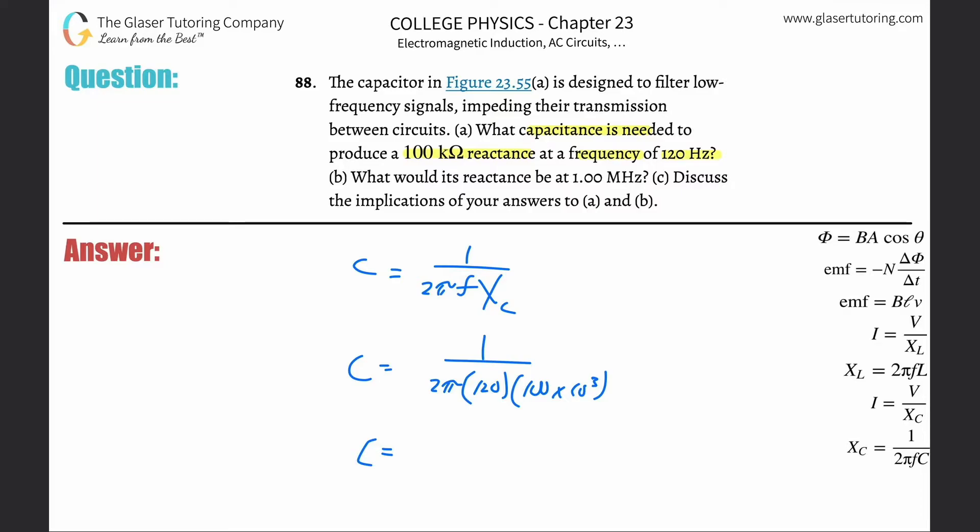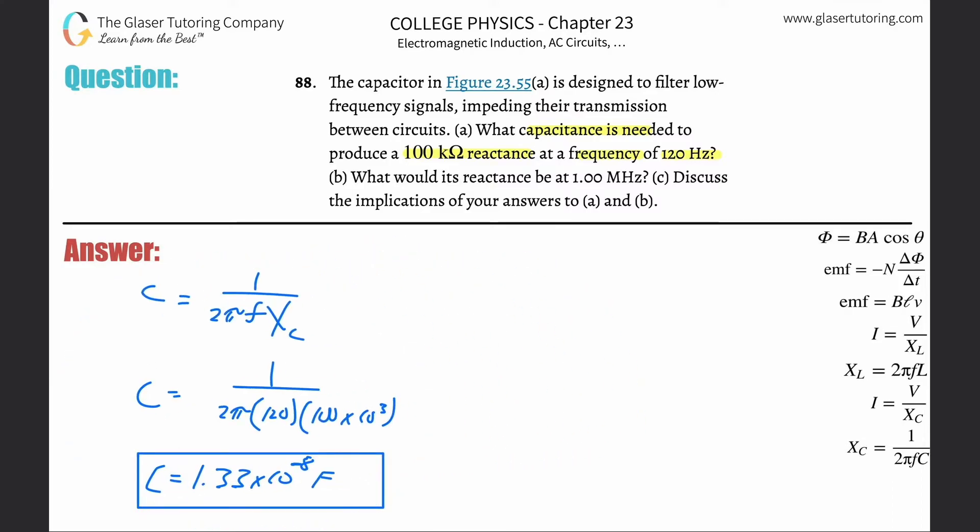Plug it in: 1 divided by parentheses 2π times 120 times 100 times 10 to the third. This works out to be roughly 1.33 times 10 to the minus 8, and that's in farads. If you needed micro, milli, or nano, we know how to convert now.